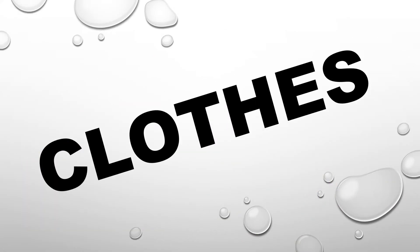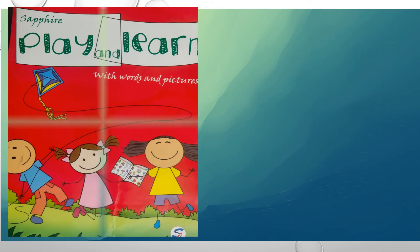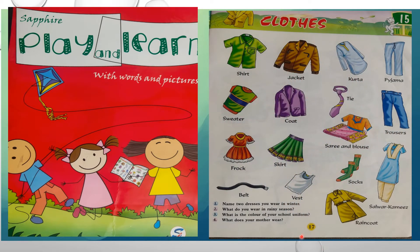Let us move on to the topic clothes. Children, take play and learn book from student's kit. Open page number 17. Lesson: clothes. Repeat after me children — shirt, jacket, kurta, pyjama, sweater, coat, tie, trousers, saree and blouse, shirt, frock, skirt, belt, vest, socks, salwar, kameez, raincoat.